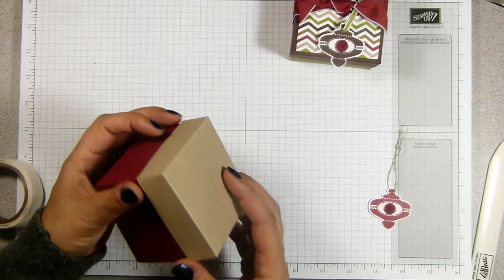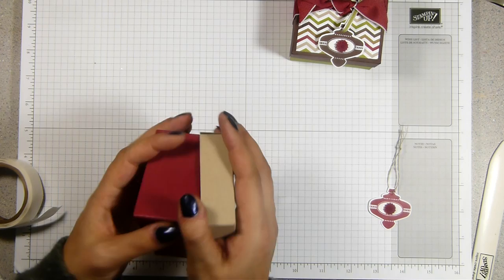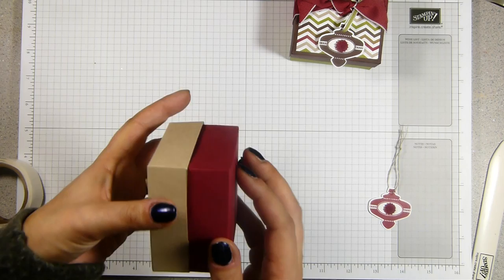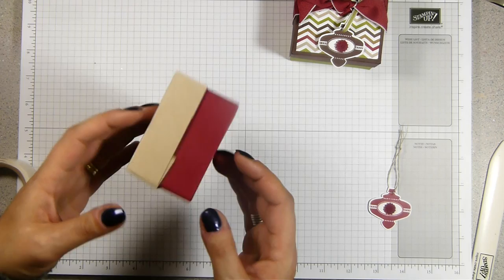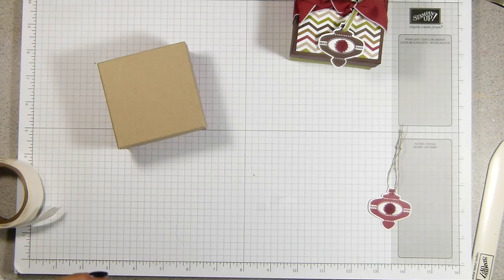Put the lid on. Now you can see that that sits perfectly over the top. When your tabs are in properly. There we go. So that sits. And it's just got... There you go. You can see it there. It's just got that little bit of extra give so that the base isn't buckling. So there we go.